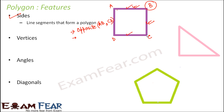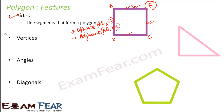AB and CD do not have any common points, so they are opposite sides. But AB and BC have a common point, which is B, so they are called adjacent sides. Adjacent sides will have a common point, and opposite sides will not have a common point.